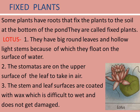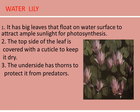The stem and leaf surfaces of the lotus are coated with wax, which is difficult to wet and does not get damaged. Water lily: it has big leaves that float on the water surface to attract ample sunlight for photosynthesis. The top side of the leaf is covered with a cuticle to keep it dry. The underside has thorns to protect it from predators.